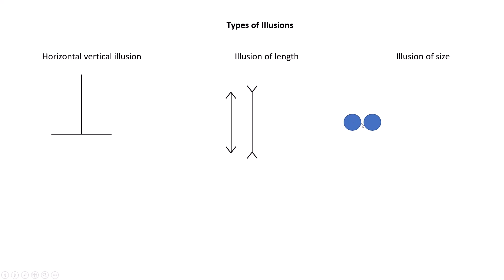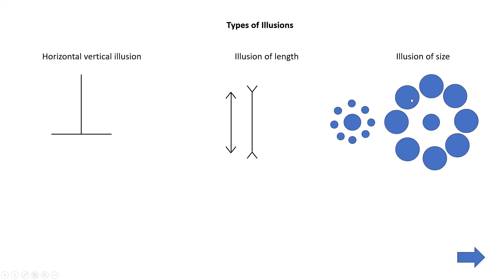The third type is the illusion of size. Two circles of the same size are shown. When small circles are placed around one and larger circles are placed around the other, the first circle looks much smaller than the second — even though both are the same size. This illusion is caused by the surrounding circles. These three — horizontal-vertical illusion, illusion of length, and illusion of size — are the perceptual alterations.